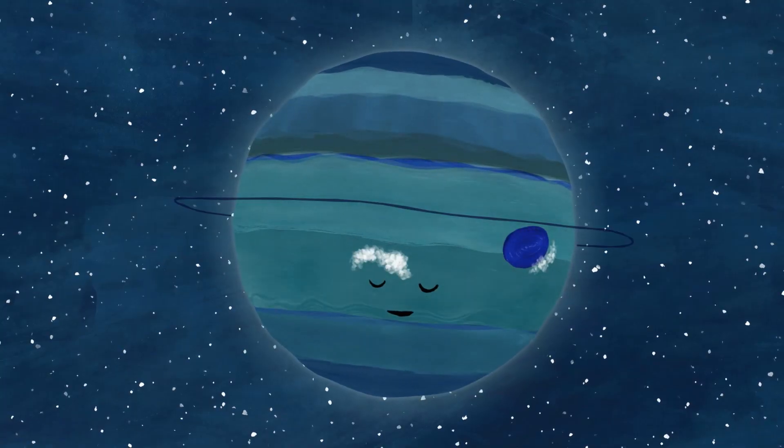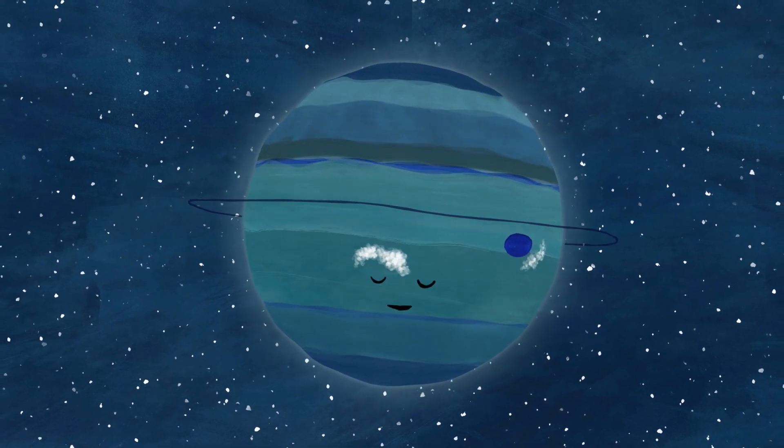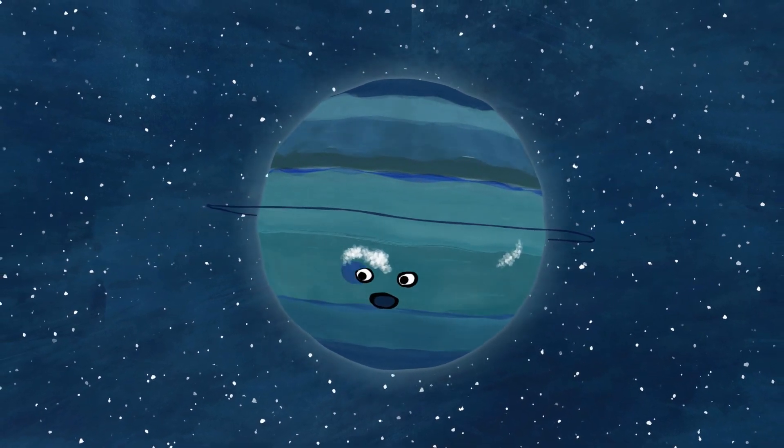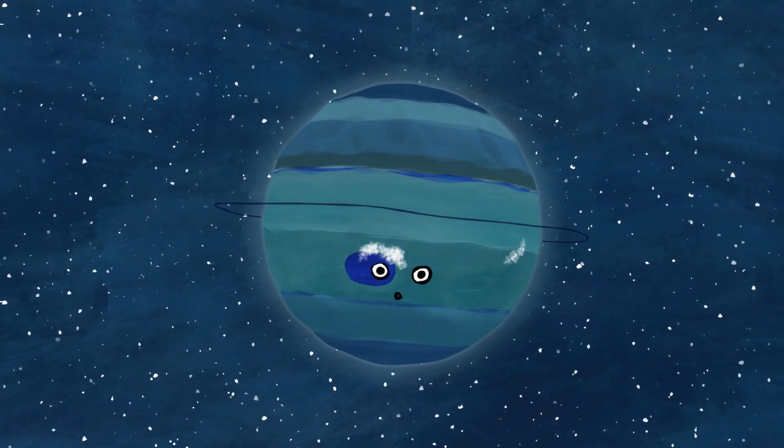Neptune is a giant planet that is frozen and blue. All over its surface, enormous storms form, creating spots that appear and then disappear again.